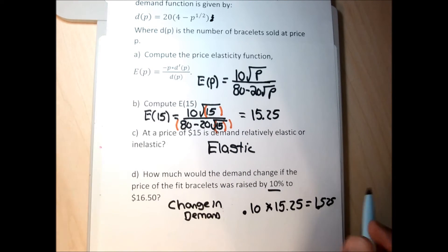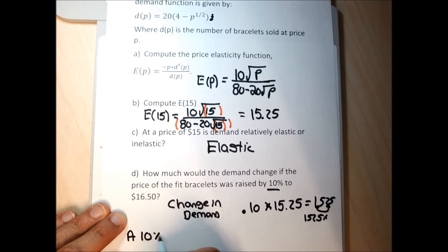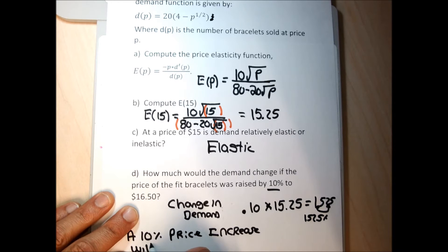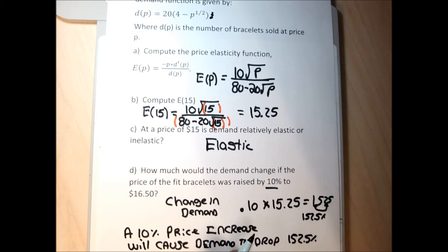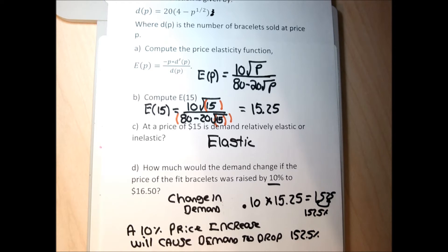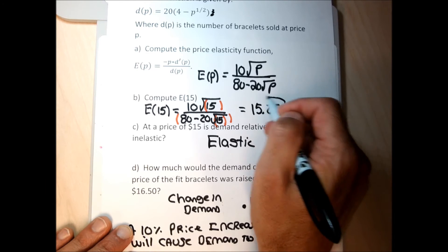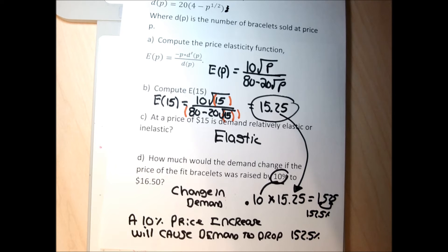Moving the decimal over two places, that's 152.5%. Demand is very elastic — a 10% price increase will cause a huge drop in demand of 152.5%. I acknowledge that a demand drop of more than 100% is a bit unusual with these simplified functions, but that's the result and how we need to interpret it. Always take the percent increase in price as a decimal times the price elasticity at that dollar amount, change the result to a percent, and that tells you how demand will be impacted.